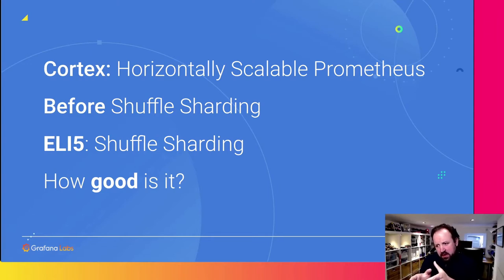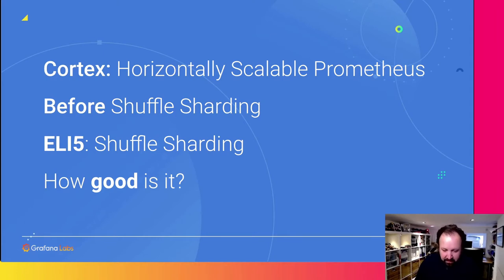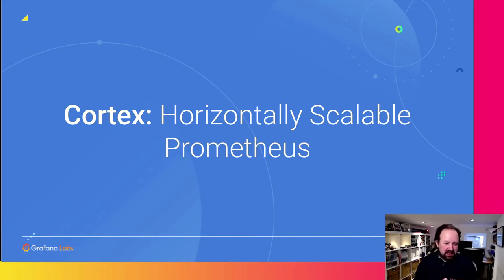Before we go on and talk about how we solved this problem before we added Shuffle Sharding, we'll then talk about Shuffle Sharding — what it does — and finally how good it is, and if it really delivers on what we said it would. So, without further ado: Cortex, Horizontally Scalable Prometheus.